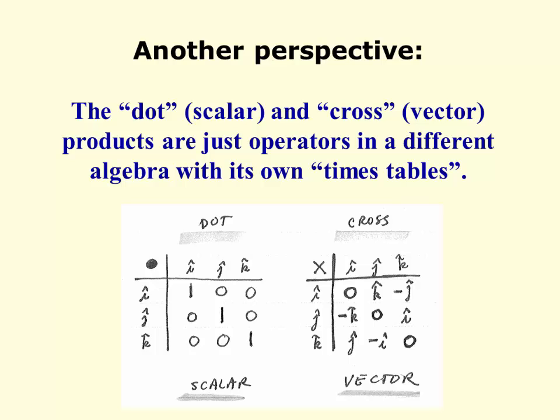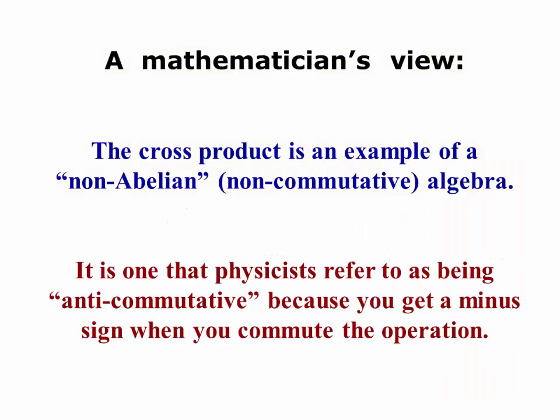As another perspective, I show you something here that I also showed in my Physics 1 video, and that is you can write out a times table for the unit vector products. The dot product just gives you a very simple scalar result with ones down the diagonal and zeros everywhere else. Cross product gives you zeros down the diagonal, because the parallel vectors give you zero. And opposite signs on opposite sides of the table. That's because this operation is said to anti-commute. Mathematicians view this as an example of what's called a non-abelian, a non-commutative algebra. It's one that physicists refer to as being anti-commutative, because you get a minus sign, an anti-sign, if you like, when you commute the operation. A cross B is the negative of B cross A.